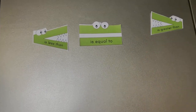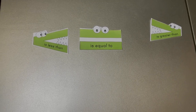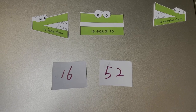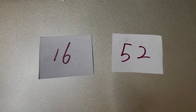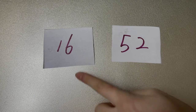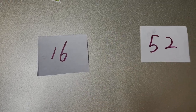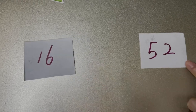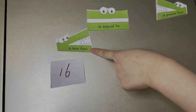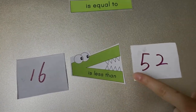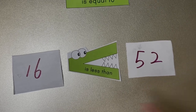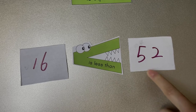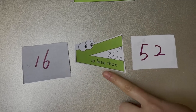Let's look at another example: 16 and 52. When we compare these two numbers, we find 16 is smaller than 52. The alligator's mouth should always face the biggest number, so 16 is less than 52. This symbol is called less than.